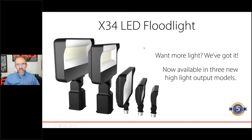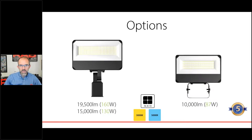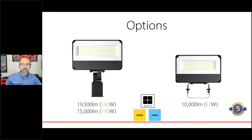About two years ago, RAB launched the X34. There are five package sizes but only two are large floods — available in slip fitter and trunnion mount, white and bronze, 3000K and 5000K. These are dedicated, not field-adjustable. While the X17 has about 12 models, because the X34 isn't field-adjustable the number of SKUs doubles to 24 different options, all backed by RAB's limited warranty.